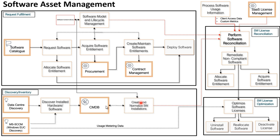Apart from software installations, software usage data is also required as input to optimize software licenses. A user who has not been using Visio for the last three months is not getting value from the software license, and this information can be used to decide whether to reallocate the license. SCCM is one of the main sources for gathering usage information, and the Agent Client Collector also introduced this feature to collect software usage information in the Quebec release.